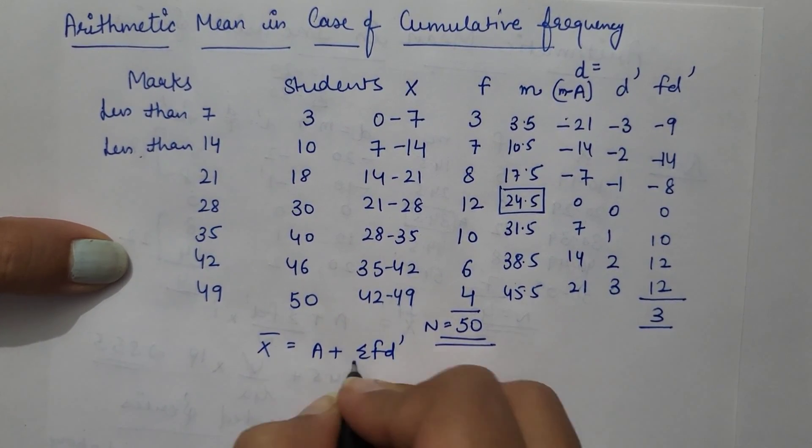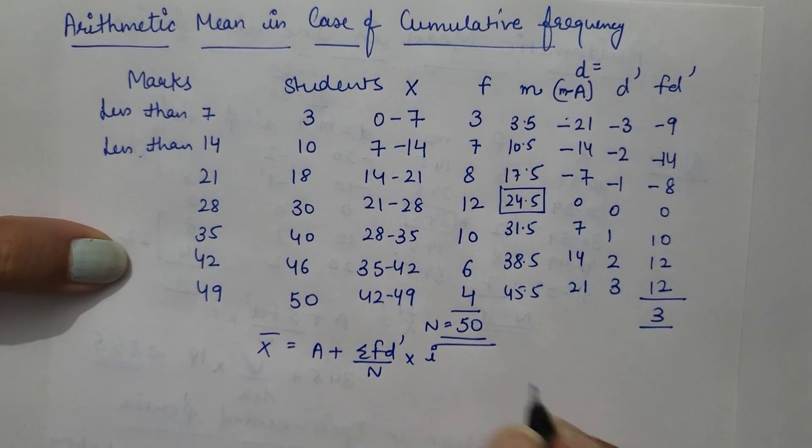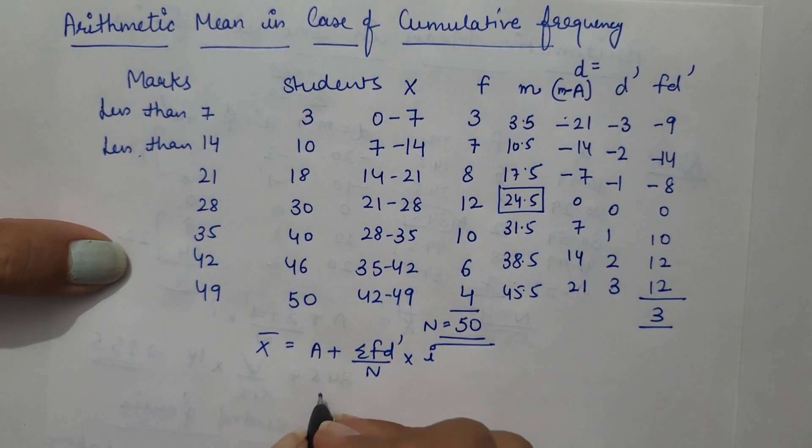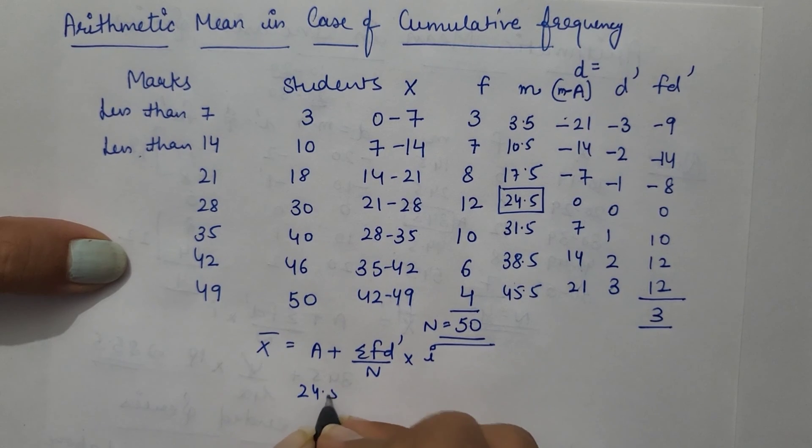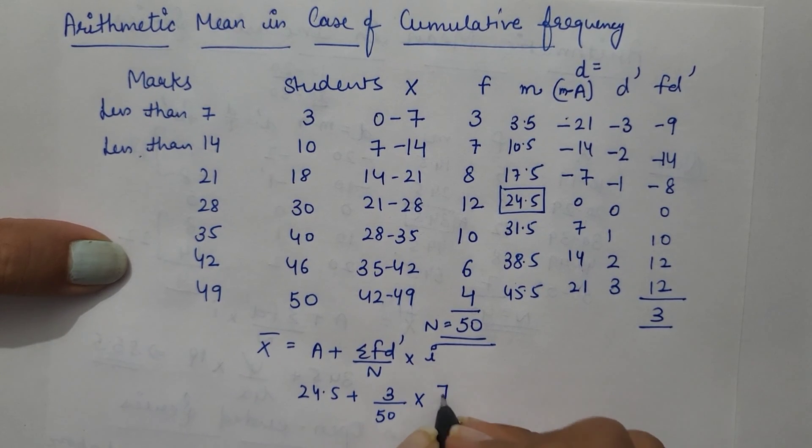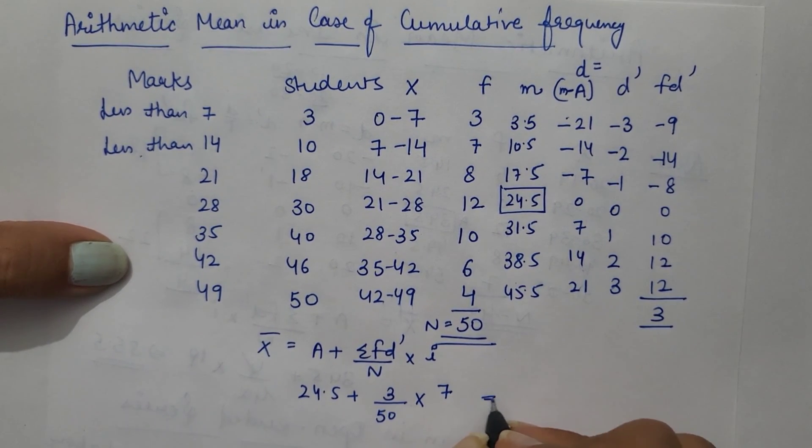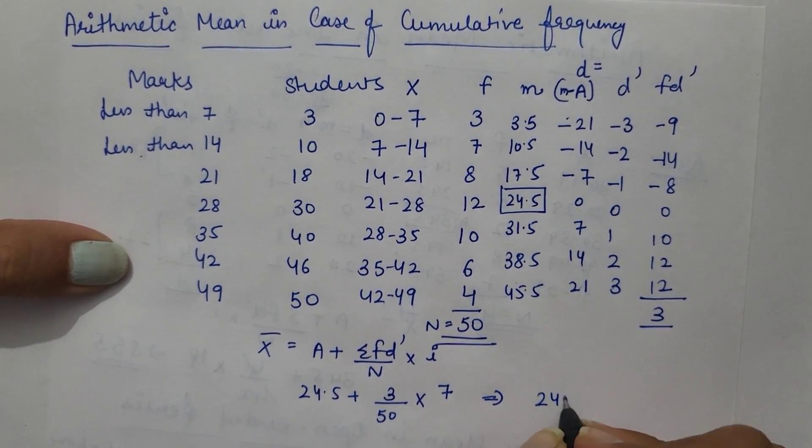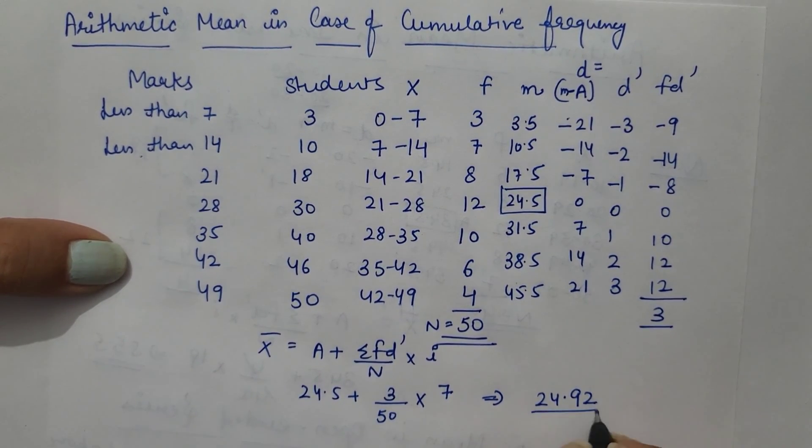Mean can be calculated. A plus summation FD dash upon N into I. A is 24.5, summation FD dash is 3, N is 50, and interval was 7. So mean is 24.92.